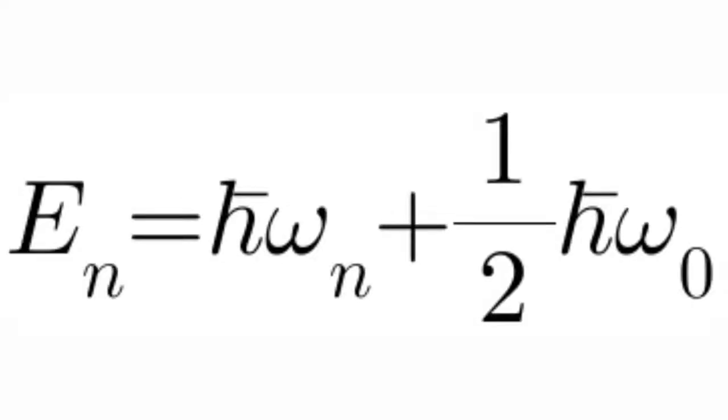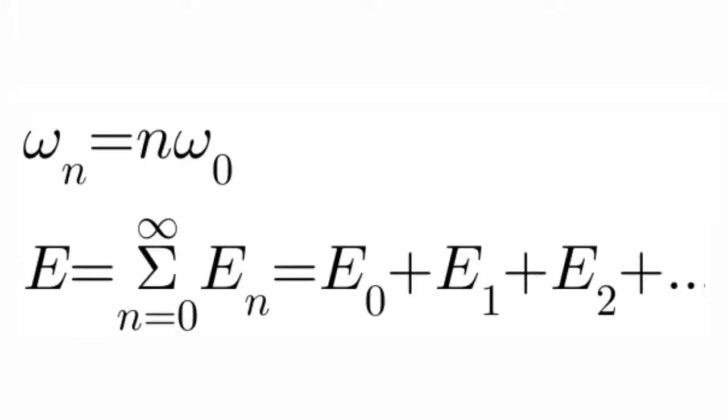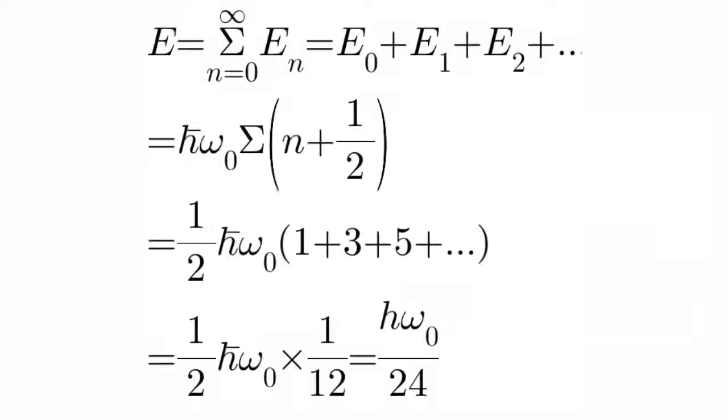So the energy of the nth string will be ℏωₙ plus half ℏω₀. Now as you can see on the screen, ωₙ is equal to n ω₀. So the total energy is the summation running over n equal to 0 from 0 to infinity of Eₙ. So that will be equal to E₀ plus E₁ plus E₂ plus dot dot dot.